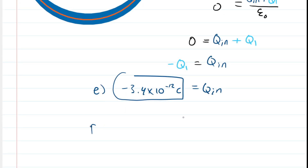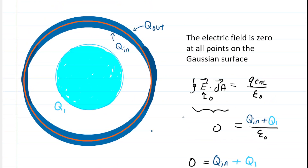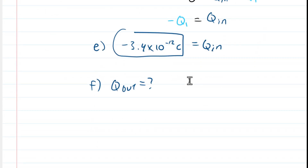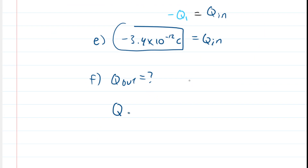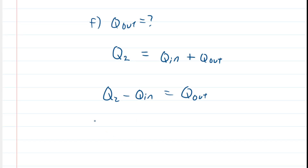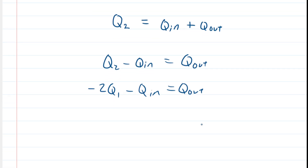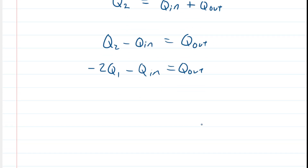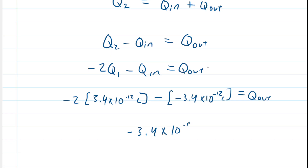For part F, we need Q_out, the charge on the outer surface of the cylindrical shell. The total charge on the shell is Q2, which equals Q_in plus Q_out. Solving for Q_out gives Q2 minus Q_in. Since Q2 equals −Q1 and Q_in equals −Q1, substituting and simplifying gives Q_out = −3.4 × 10⁻¹² coulombs. That is the charge on the outer surface of the cylindrical shell.